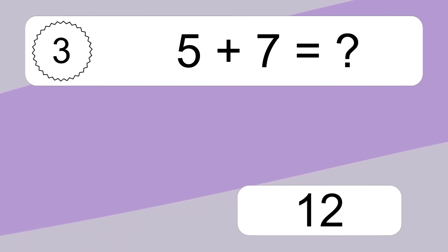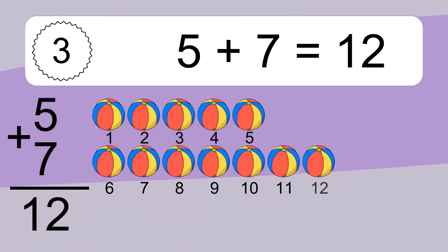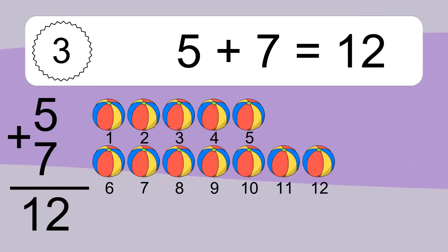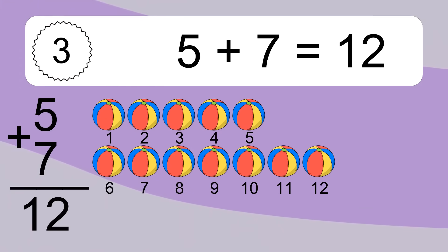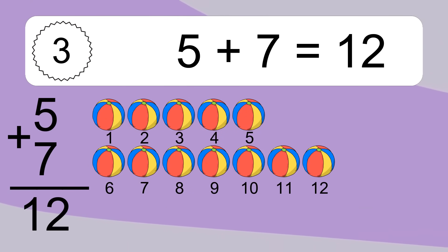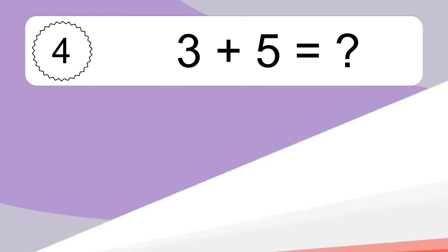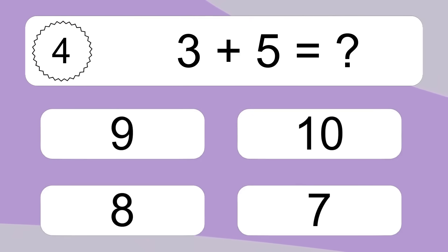5 plus 7 equals what? 5 plus 7 equals 12. Let's count it: 1, 2, 3, 4, 5, 6, 7, 8, 9, 10, 11, 12.